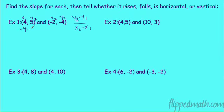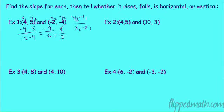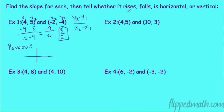Negative 4 minus 5 over negative 2 minus 4 gives us negative 9 over negative 6, which reduces to 3 over 2. That's a positive slope. When you think positive, understand that as the line goes to the right it rises. Up 3 over 2, up 3 over 2 — it's always going to rise no matter what kind of positive number it is.